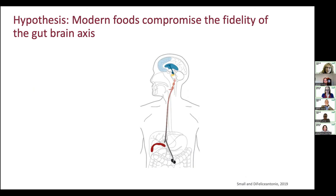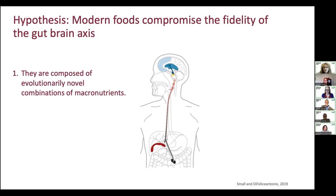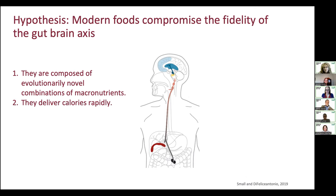From the view of the gut-brain axis, my lab asks: why? What is it about the modern food environment that makes it so difficult to change eating behavior and makes overconsumption such a problem? We're exploring three hypotheses: one, that modern foods are composed of evolutionary novel combinations of macronutrients; two, that they deliver calories to the gut rapidly; and three, that they contain additives that alter taste and mouthfeel.